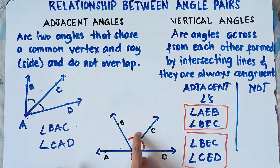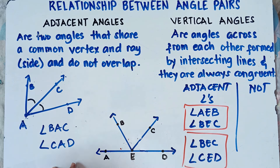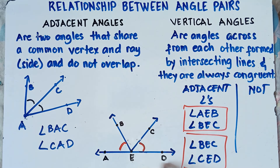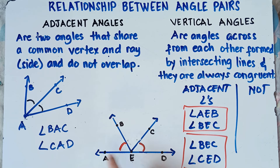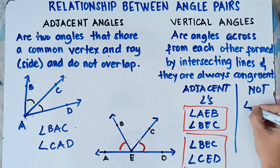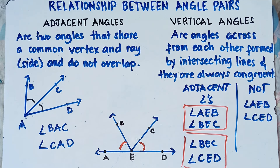How about this? What if I say angle AEB and angle CED — are those adjacent angles? Nope, it's not. Why? Because they don't share a common side. They share a common vertex, that is vertex E, but they don't share a common side. So the angles are too far away from each other — they don't share a common side. Therefore, angle AEB is not adjacent to angle CED. They are not adjacent angles.